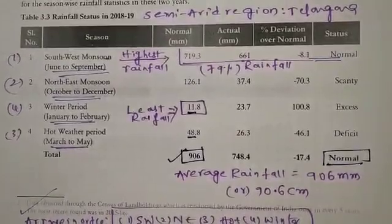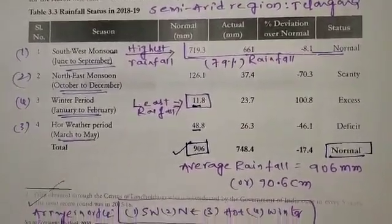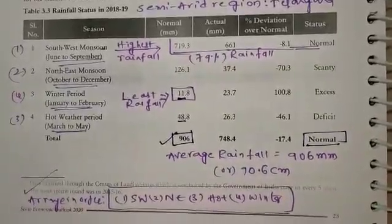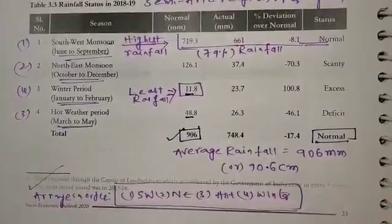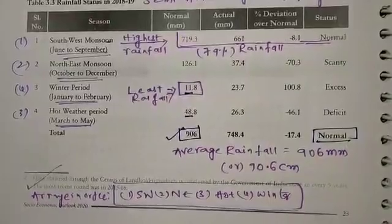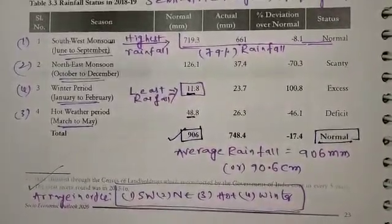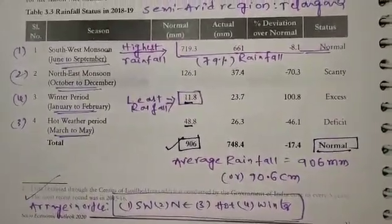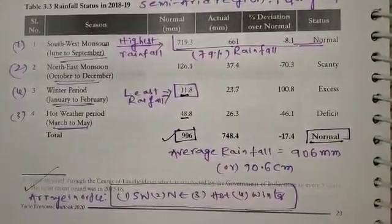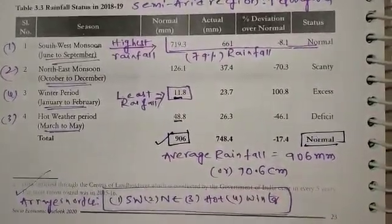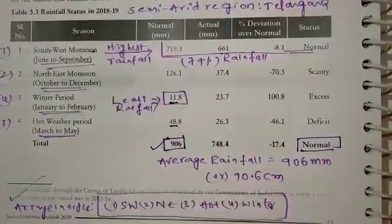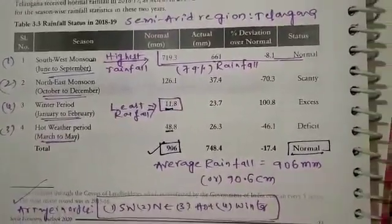The highest rainfall is 79% from the south west monsoon season, followed by north east monsoon (October to December), then winter (January to February), then hot weather period (March to May). The average rainfall of Telangana is 906 mm. The least rainfall is recorded in the winter season.